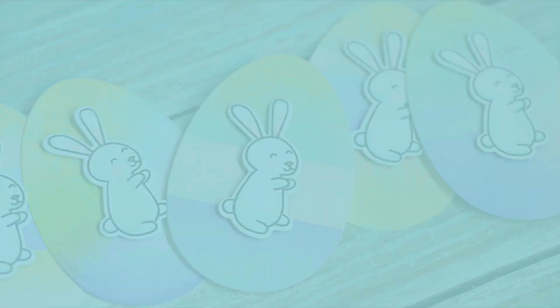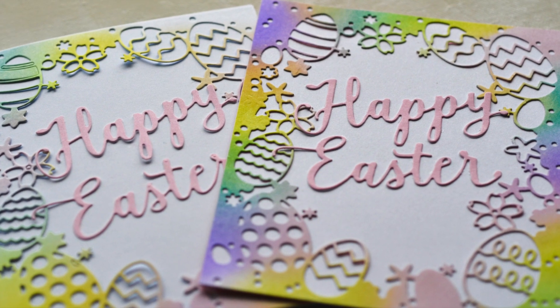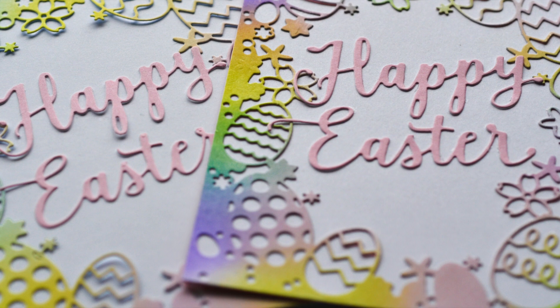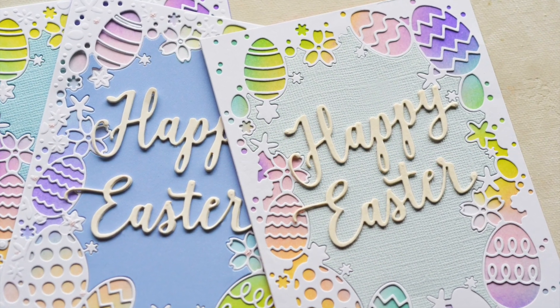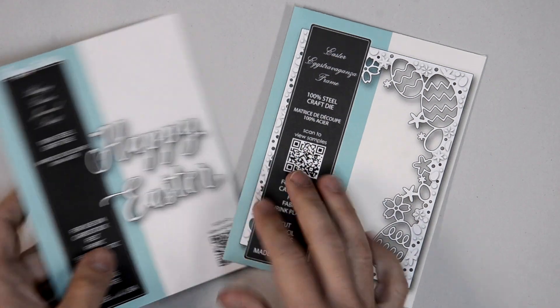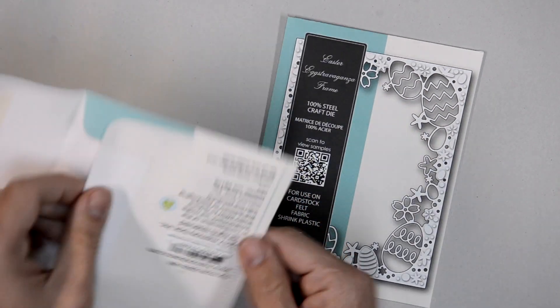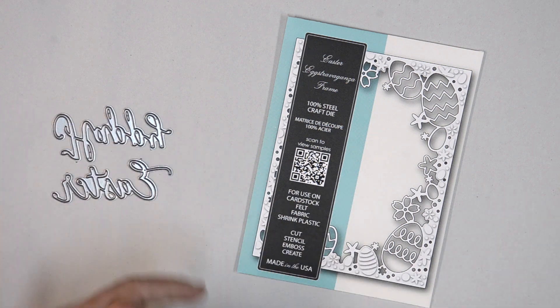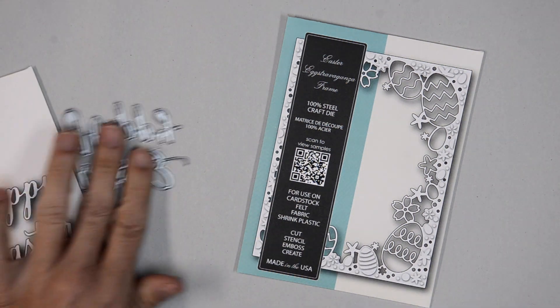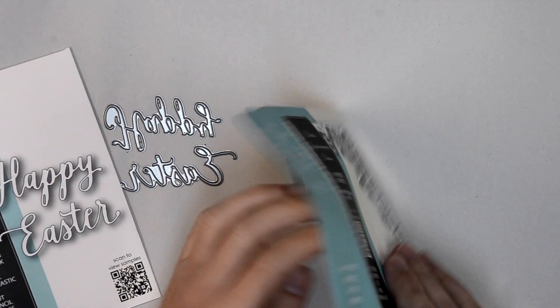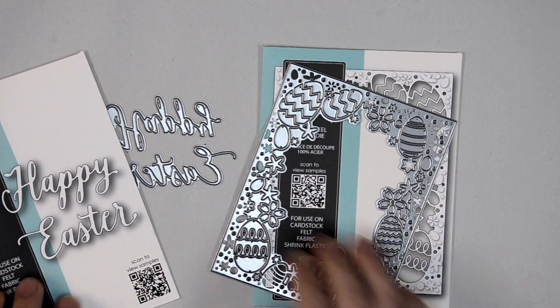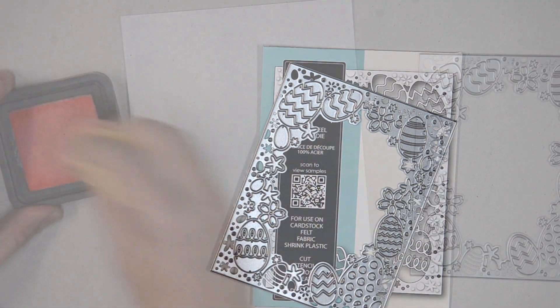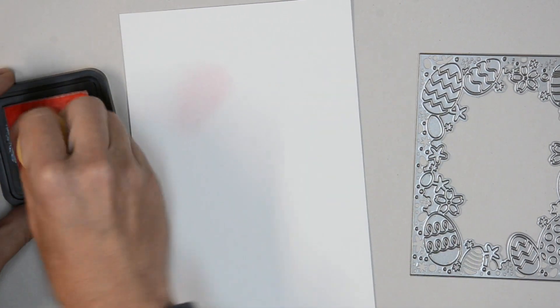Now here's another project that I think you'll have a lot of fun with. It features an Easter egg frame from Memory Box that can be used in two different ways for two very different looks. So let's get started. I'm going to be using the Happy Easter journal script die and the Easter extravaganza frame. The Easter extravaganza frame is very detailed. It's got cut portions and it's got embossed portions and I'm going to show you how you can use these to create some really great projects.